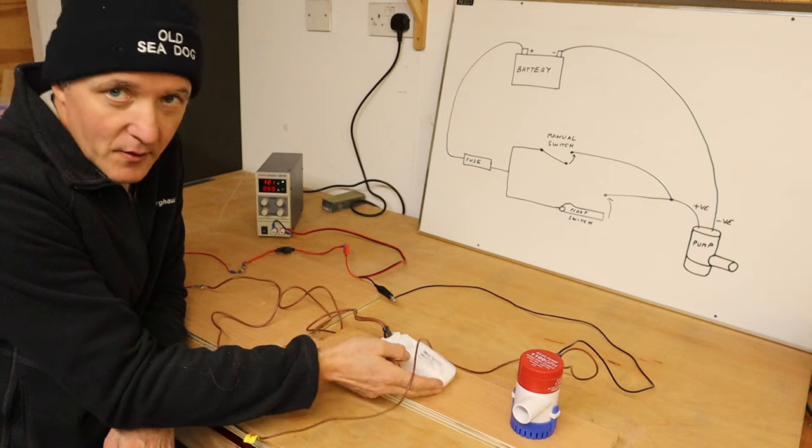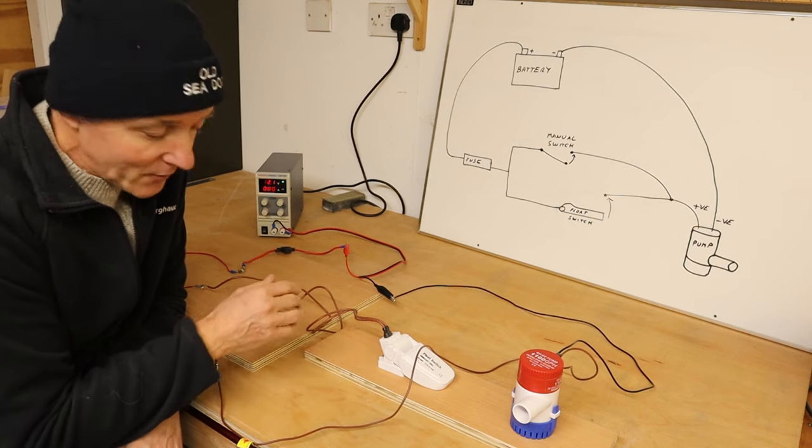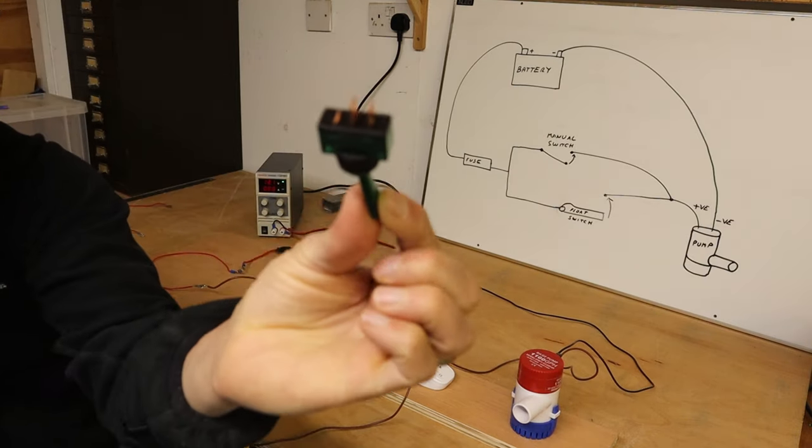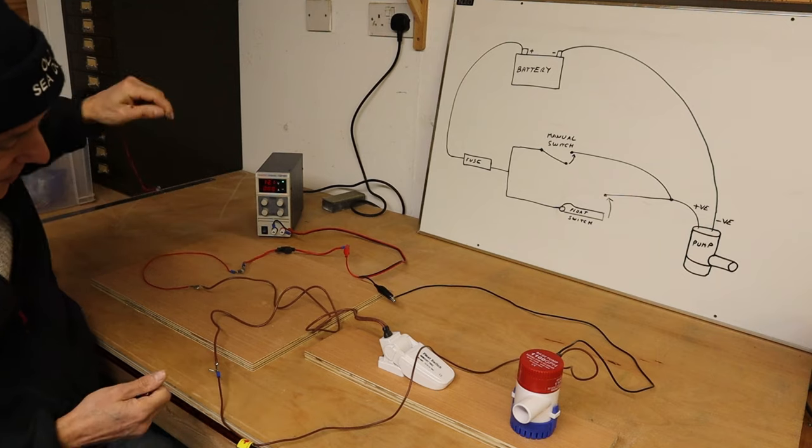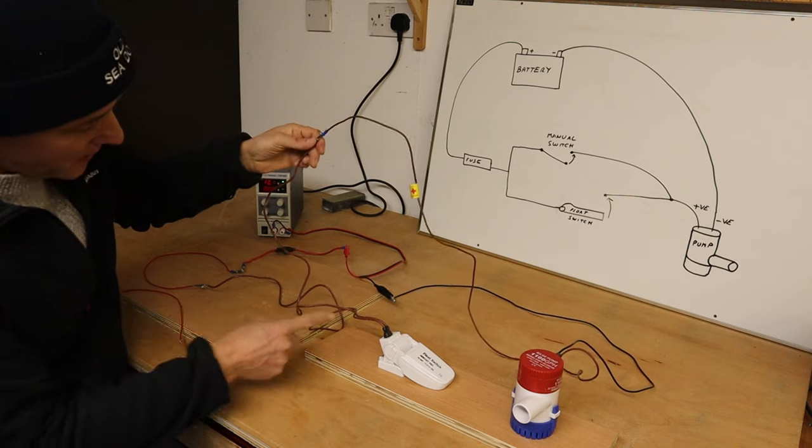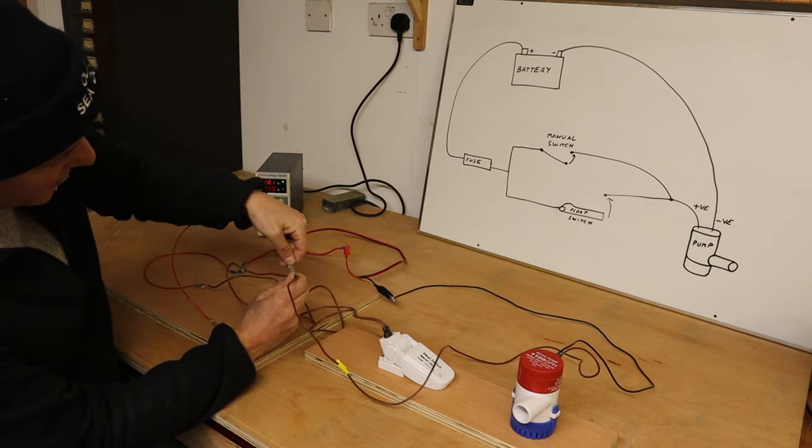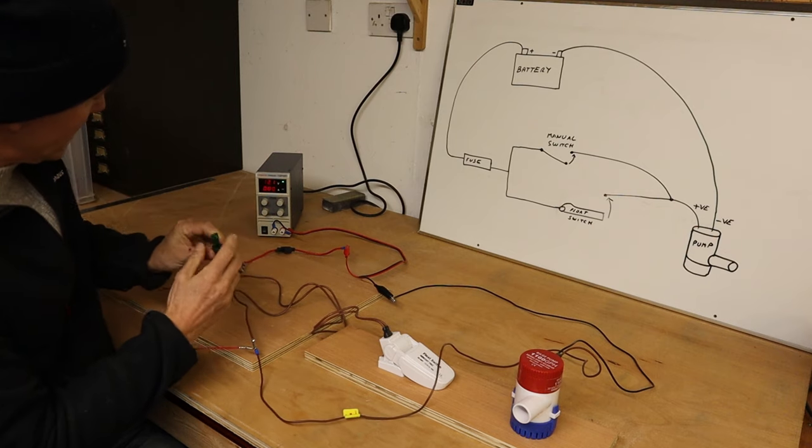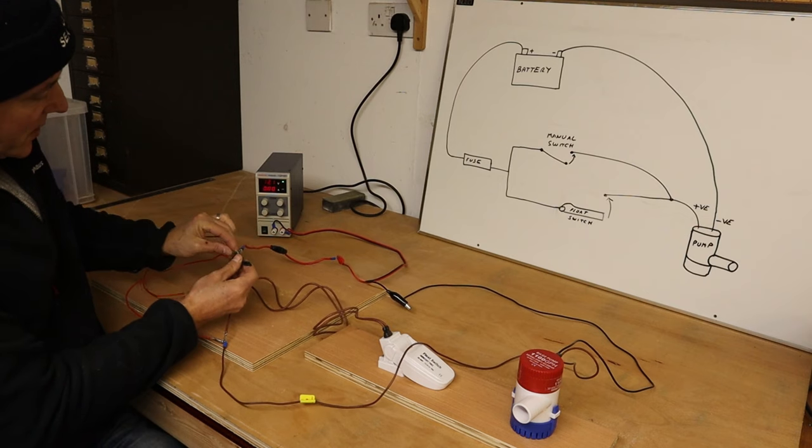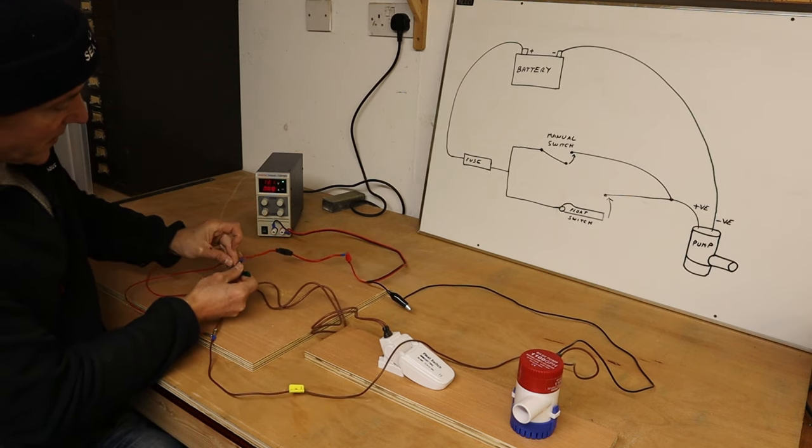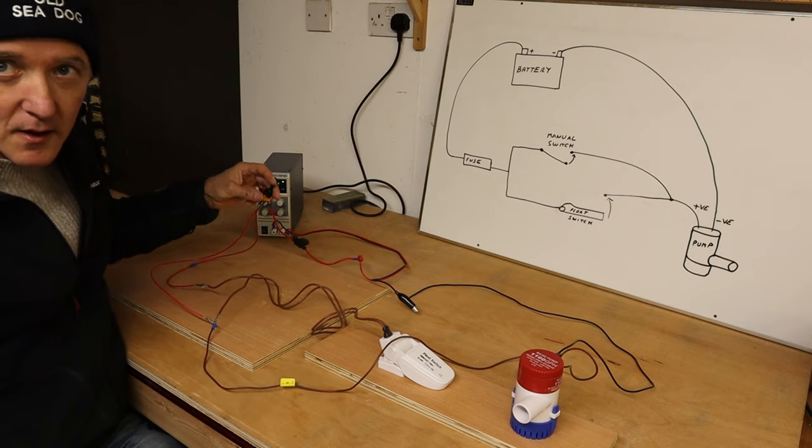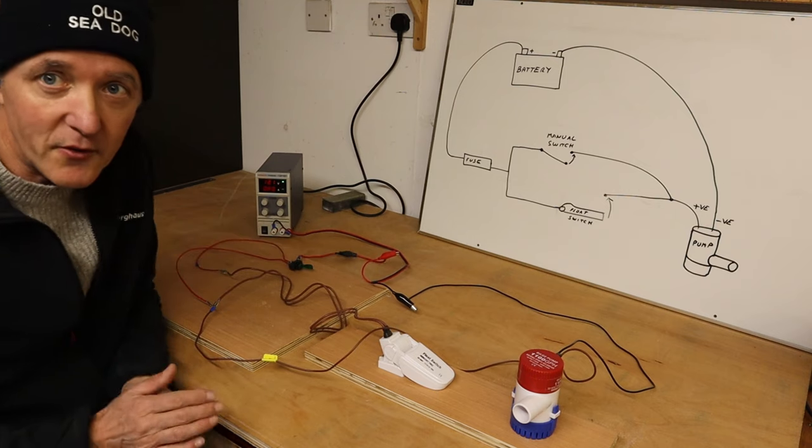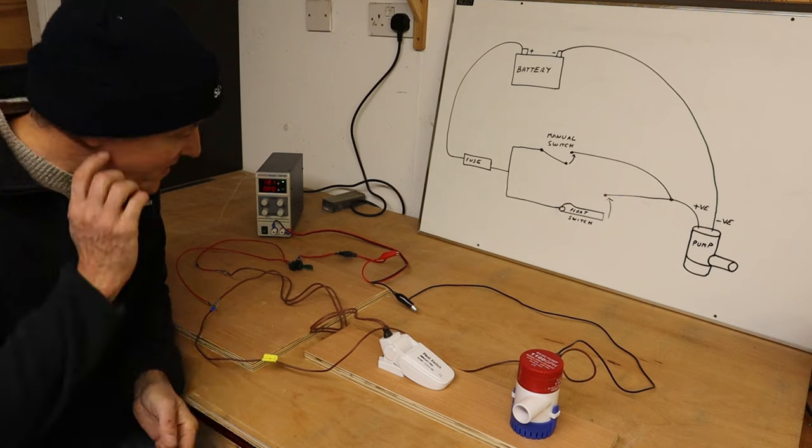So what I just need to do from here is add in the other way of operating it, which is via our little toggle switch. So what we're going to do is, just from this positive feed part of the circuit, I'm going to branch off in a parallel circuit to the switch, and the other terminal of the switch gets fed to the positive feed. And now either switch will operate it. So really simple circuit.